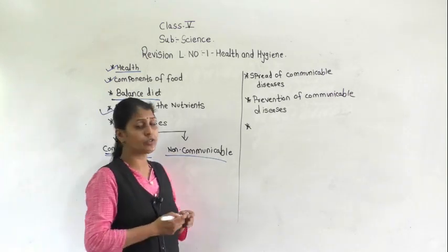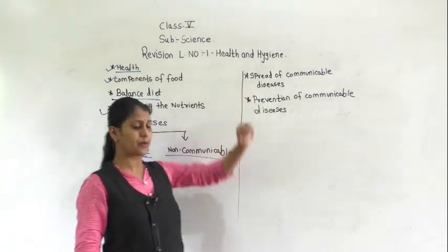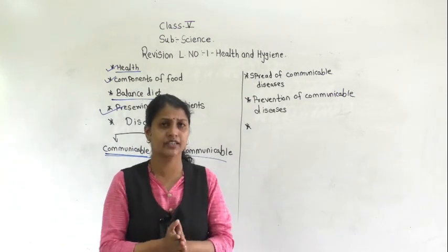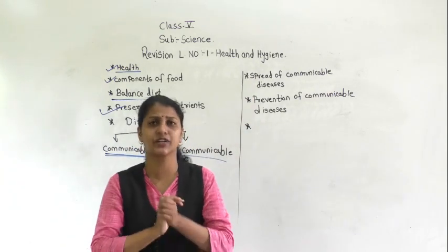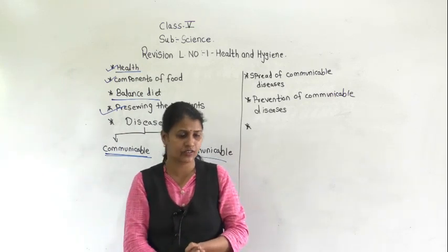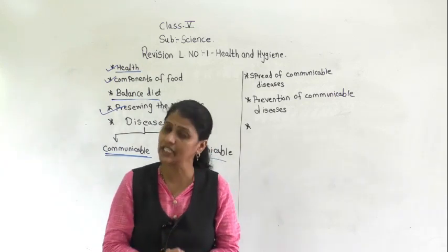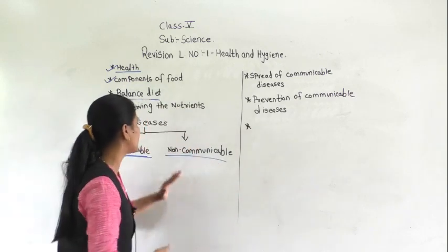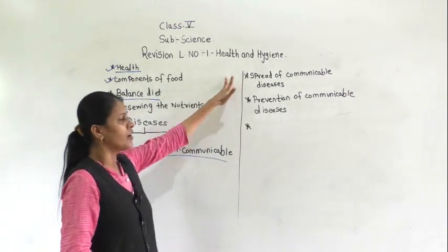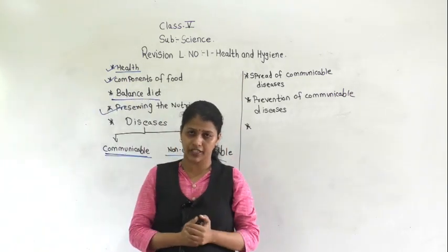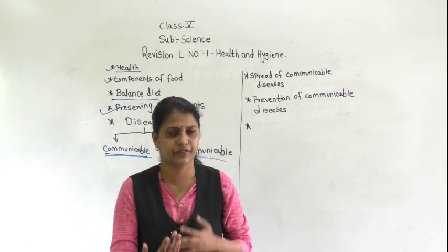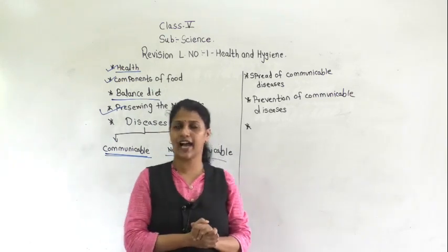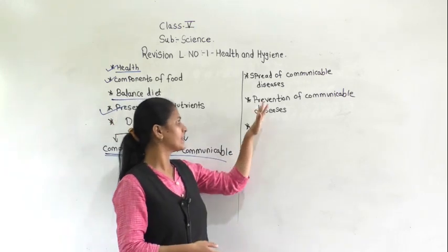Communicable diseases are diseases which spread from person to person. How do they spread? Communicable diseases are spread through air, water, insects, and direct contact with an infected person.